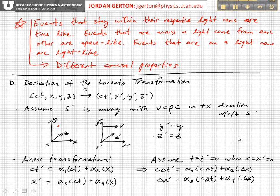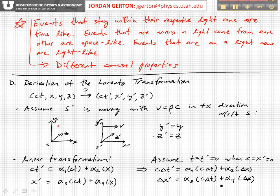The other thing that will help us is to imagine that when the origin of the S prime coordinate system passes the origin of the S coordinate system — so when x equals x prime equals 0 — the two observers in S and S prime start stopwatches. Basically, t is equal to t prime equals 0 when x is equal to x prime equals 0. So there's a particular event, a single event that is the origins passing each other, and at that point we mark that as time equals 0. Since it's the coordinate origins, that's also x equals x prime equals 0. This basically just allows us to rewrite the general transformation with delta t's and delta x's.